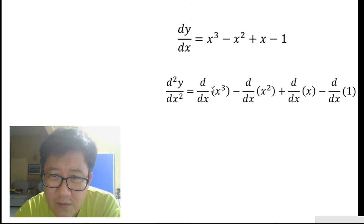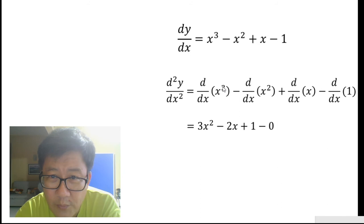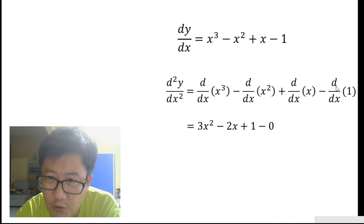Now for d squared y dx squared, we differentiate each term in the expression. There are four terms, so we differentiate all four independently. When we differentiate x cubed we get 3x squared, when we differentiate x squared we get 2x, when we differentiate x we get 1, and when we differentiate a constant we get 0. Tidying this up gives us our answer.